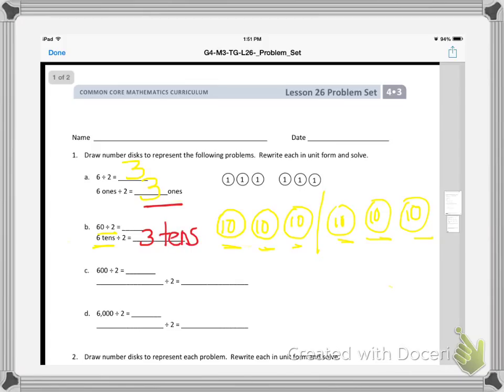And what is 3 tens in standard form? 3 tens, 1, 2, 3, is 10, 20, 30. So I write 30.